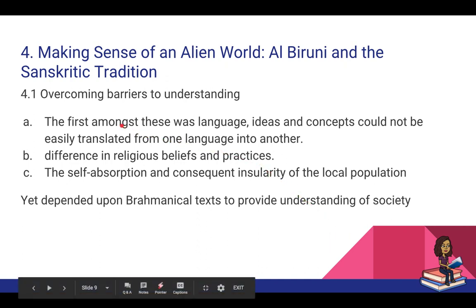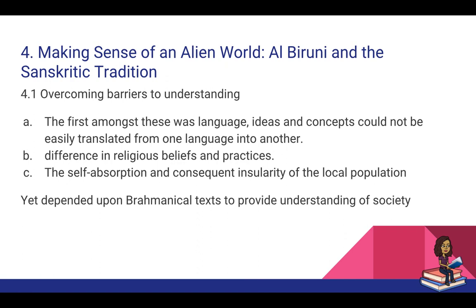Al-Biruni talks about many barriers to understanding between the Indian subcontinent and the world he came from. He identifies three major barriers: first, language — Sanskrit and Arabic were so different that when you translated works from one to the other you couldn't really get the essence. Second, the difference in religious beliefs and practices, which were polar opposites. Third, he is highly critical of the self-absorption of Indian people — how they were insular, had no clue about what was happening in the world, and had made no improvements to old books.